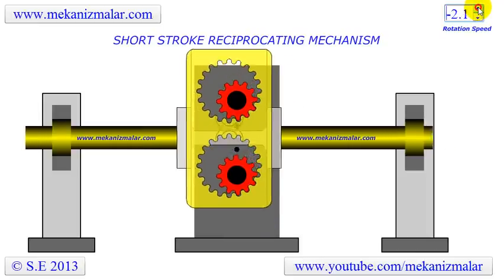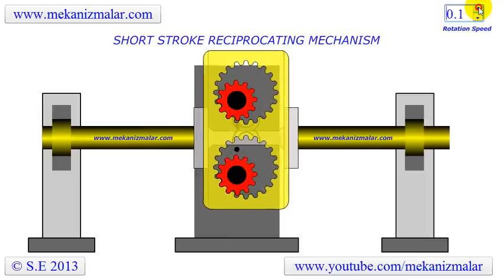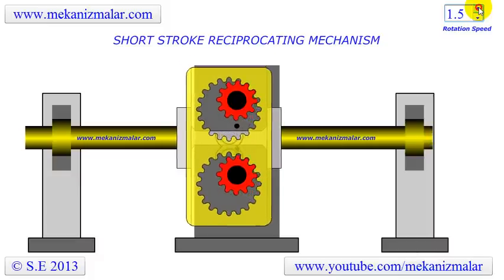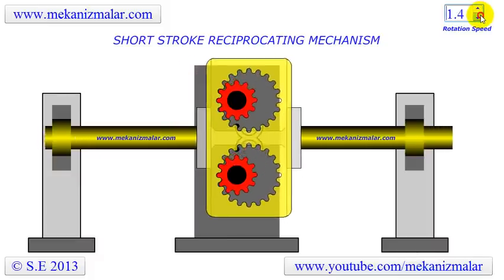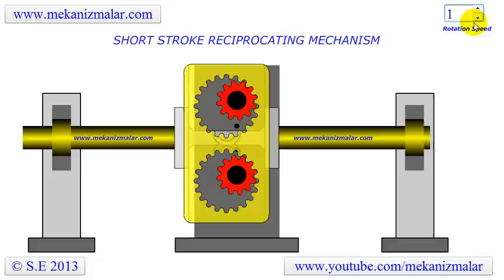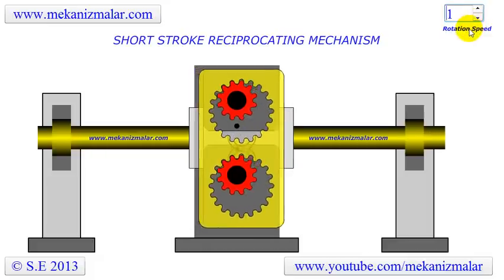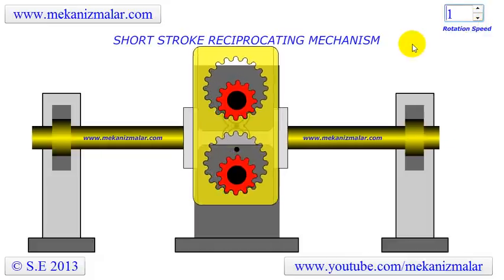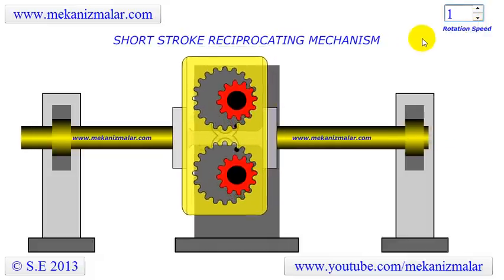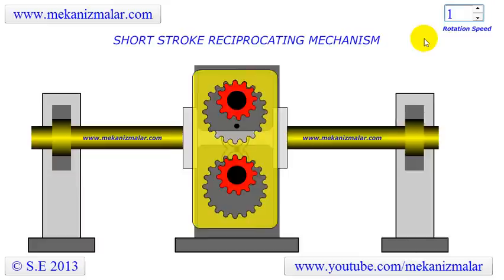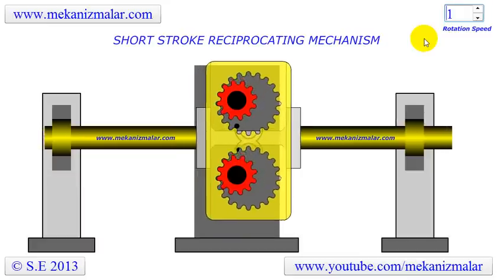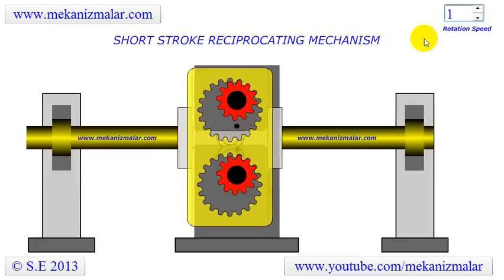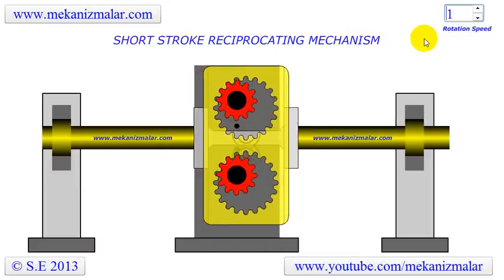However, most of the time we do not need adjustment in the stroke, and we want the same duration of reciprocation in both directions. For example, the pistons in an engine reciprocate, but the stroke never changes, and the duration of the reciprocation is the same in both directions.